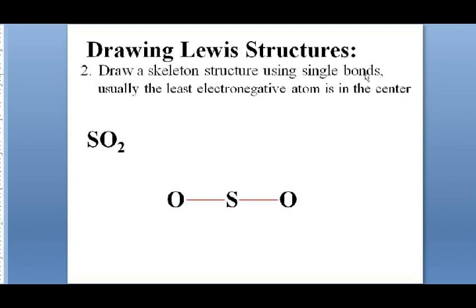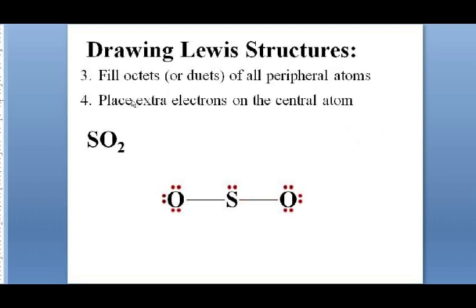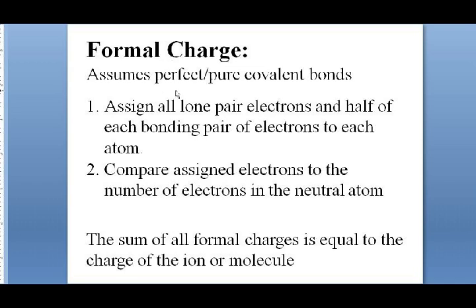Steps three and four: fill the octets of all peripheral atoms. I have 18 valence electrons to work with; I used four in my bonds, leaving 14 to distribute. After filling the octets of the peripheral oxygen atoms, I have two extra electrons, which go on the central atom — the sulfur.